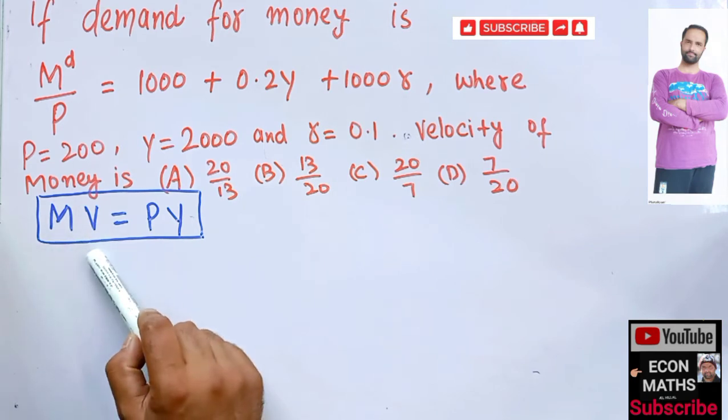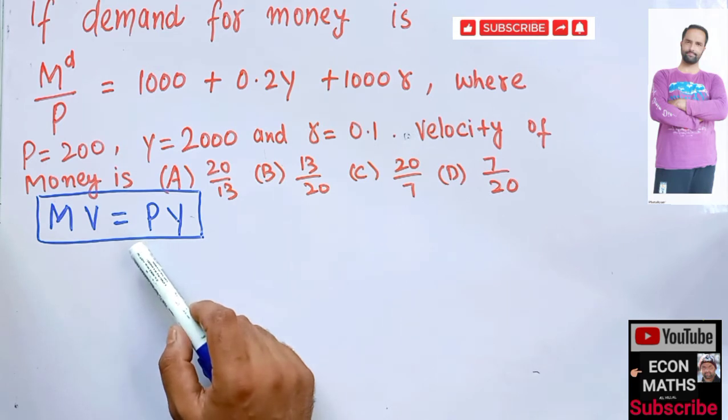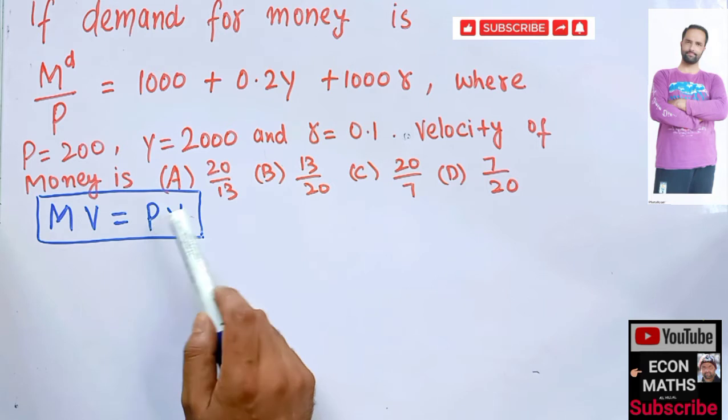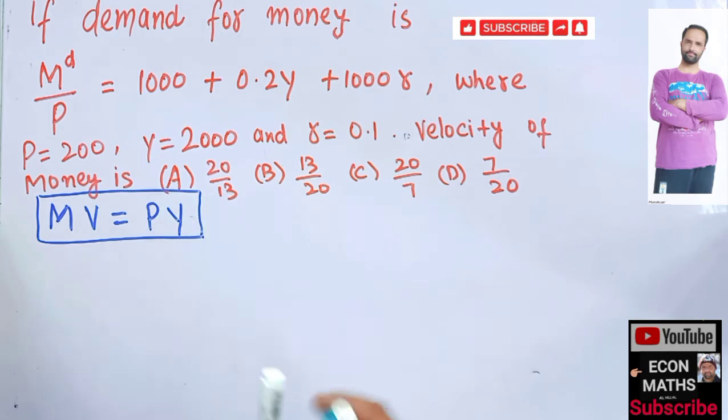Where M is the money supply, V denotes the velocity of money. By velocity of money we mean the number of times the money supply is spent to obtain goods and services. And P is the price level and Y is obviously the GDP.